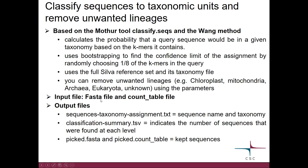As an input file, you give a FASTA file and a count table file. As output, you get the sequences taxonomy assignment file, which is the one you will use for the later steps. It contains the sequence name and the taxonomy. You also get the classification summary file, which indicates the number of sequences that were found at the different levels of the taxonomy.